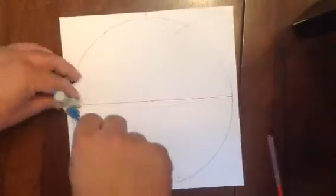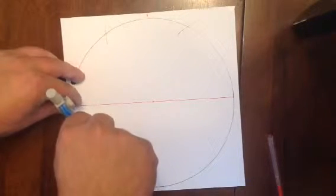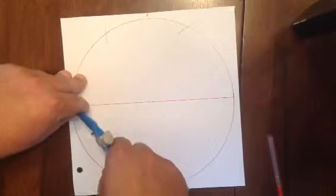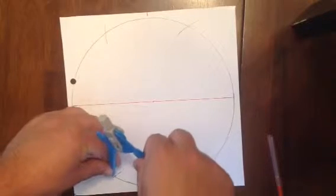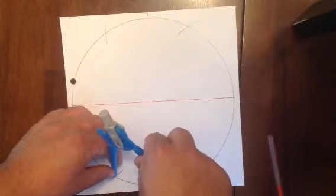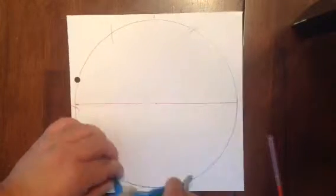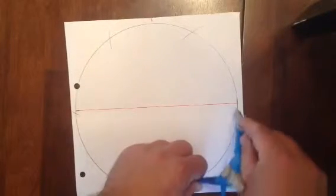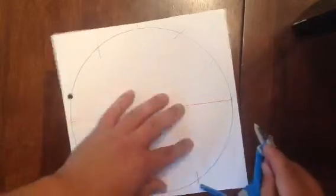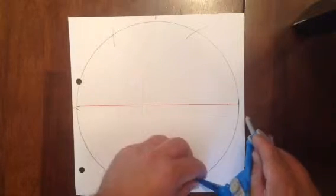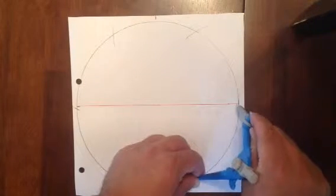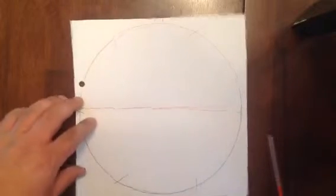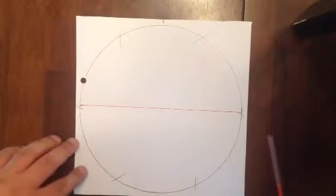Let's keep going around. Put your pointer on the intersection there. And then of course, this one should line up or pretty close to line up. Let me try that again. I like to hold the pointer so it doesn't move. And it was a little bit off, but pretty close.